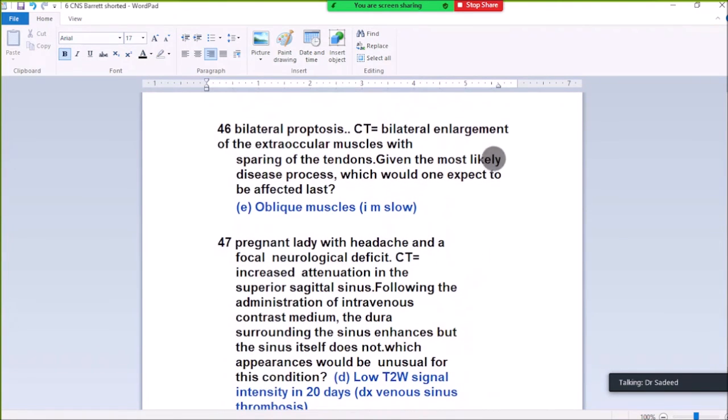Question 46. Bilateral proptosis due to bilateral enlargement of the extraocular muscles, sparing the tendons. Enlargement of extraocular muscles in thyroid eye disease is seen by the mnemonic I'M SLOW: inferior rectus, medial rectus, superior oblique muscle, lateral rectus, and oblique muscle. Superior rectus then lateral rectus and oblique muscle is last. The oblique muscle will be least affected.